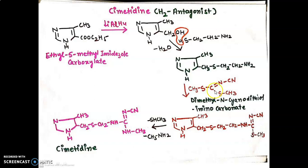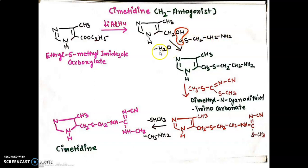The next drug is cimetidine, which is an H2 antagonist. Here we take starting material ethyl 5-methylimidazole-4-carboxylate. In the presence of lithium aluminium hydride we reduce the ester moiety, and perform substitution on this imidazole moiety. This is further treated with 2-mercaptoethylamine, and after dehydration we get an intermediate.